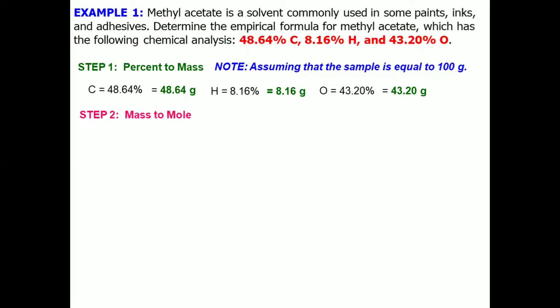Step number two, mass to mole. We will apply this concept here. So let's begin with carbon: 48.64 grams times one mole over 12.01 grams. Always remember that one mole of carbon is always equal to 12.01 grams. This is the atomic mass of carbon, which can be found in the periodic table of elements. The answer is 4.05 mole.